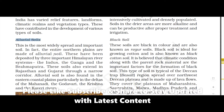Alluvial soils are the most widely spread and important soils of the northern plains. These have been deposited by three important Himalayan river systems: the Indus, the Ganga, and the Brahmaputra. If asked in which rivers alluvial soils are deposited, remember: Indus, Ganga, and Brahmaputra.